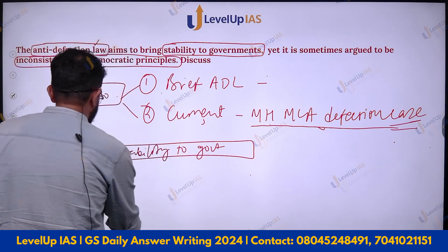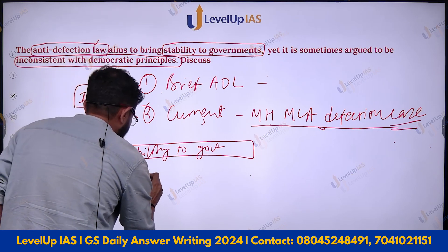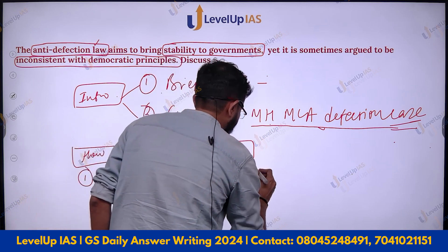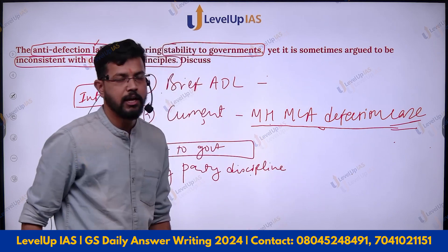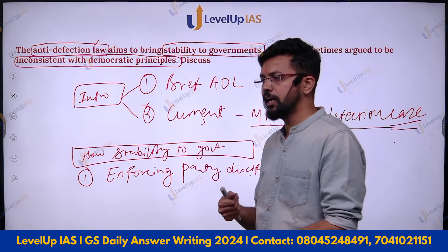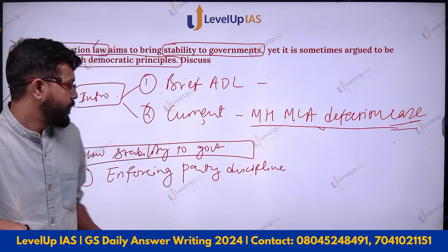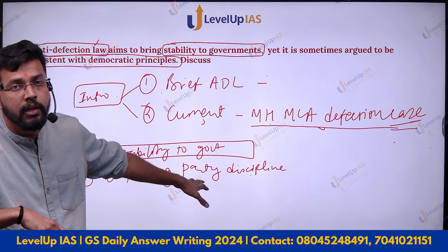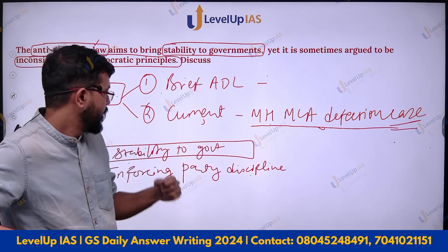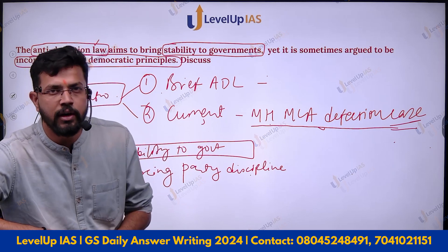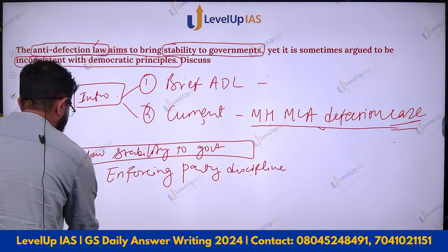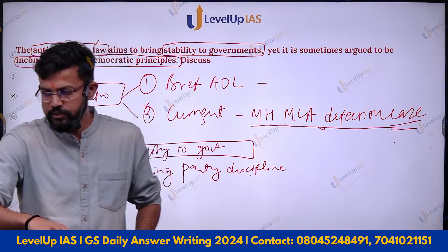Enforcing party discipline: MLAs and MPs are not allowed to act on their own — they have to follow the guidelines and directives given by the party. The first point is that it gives power to the party over the individual. Whatever directives come from the party, the MPs and MLAs are bound to follow them.